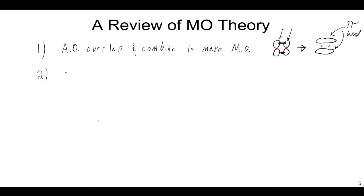Tenet two: each molecular orbital can hold zero, one, or two electrons. Importantly, molecular orbitals holding zero electrons still matter — you might be able to promote an electron into that empty state. These empty molecular orbitals define a lot of the properties of electrical conductivity, as we'll see shortly.